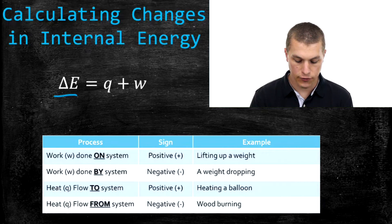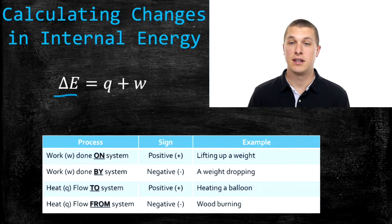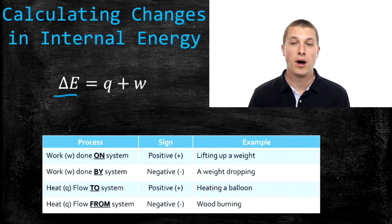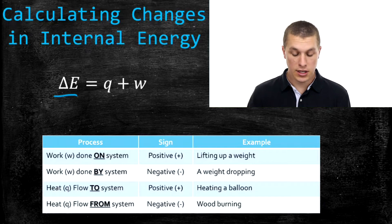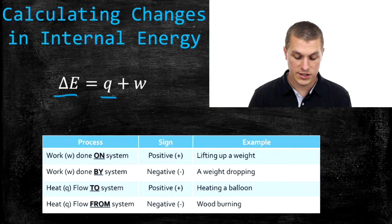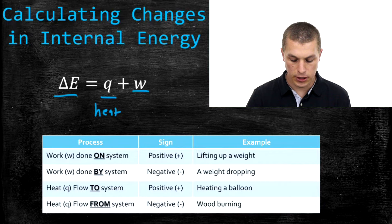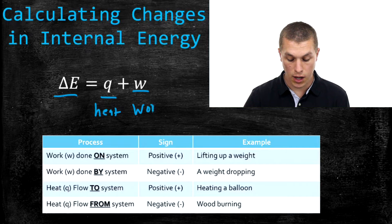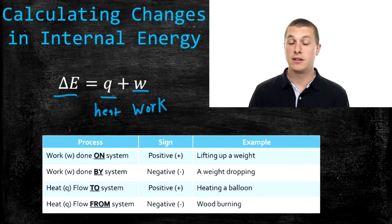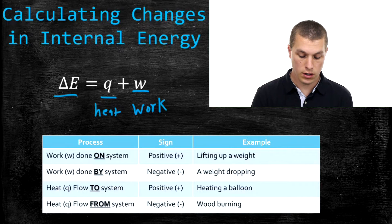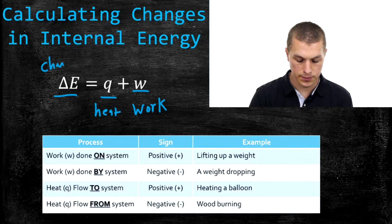This delta E stands for change in internal energy. How much a system changes in energy depends on Q, which is the heat flow in and out, and W, which is the work done on or by the system. If we combine the changes in heat and the changes in work, what we get is the change in internal energy.